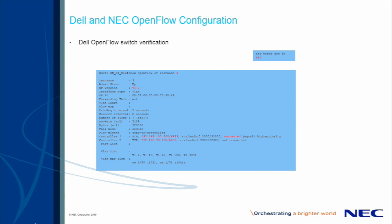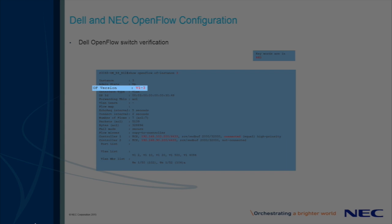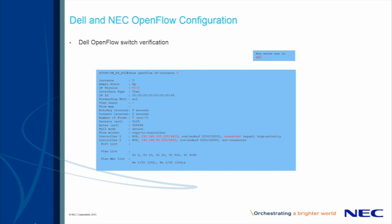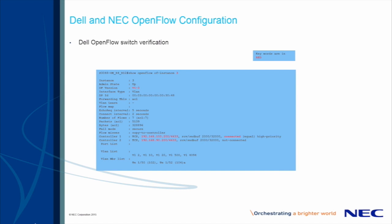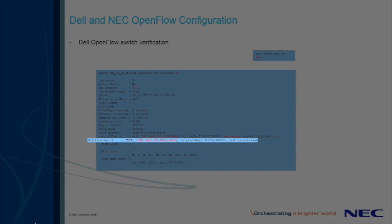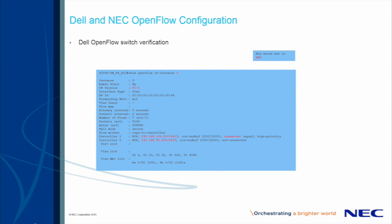Here we're illustrating the output of a working OpenFlow control channel to the NEC Programmable Flow Controller. Notice the CLI output from the Dell OpenFlow switch illustrates that we are leveraging OpenFlow version 1.3 and have an active or connected session to the PFC cluster on FIP 192.168.100.200. Although the second session to the PFC cluster on FIP 192.168.90.200 shows not connected, the configuration in place is correct and will transition to the connected state should the other OpenFlow control channel connection be lost.